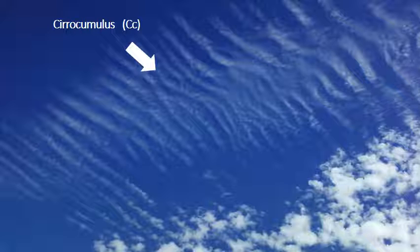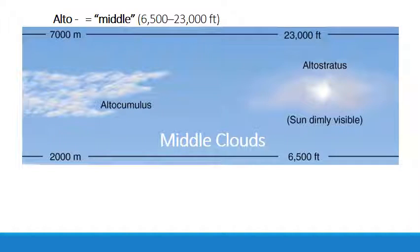Middle clouds form in the middle altitude range between 6,500 and 23,000 feet. They're described with the prefix alto — which means tall in Latin — but we take that to mean middle. So when you see the alto prefix, think middle-layer clouds. There are only two in the middle layer: altocumulus and altostratus.